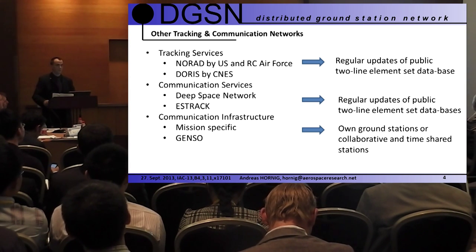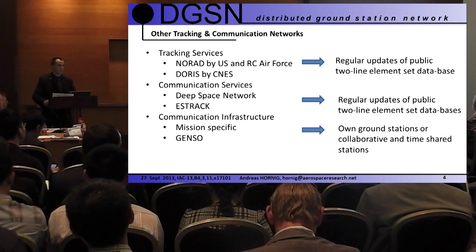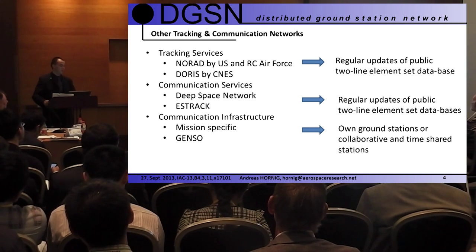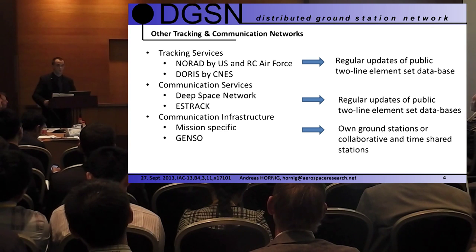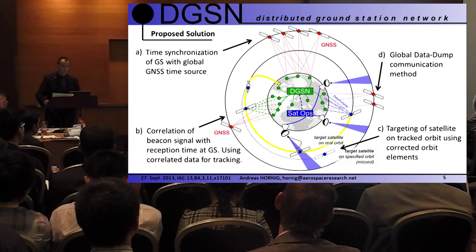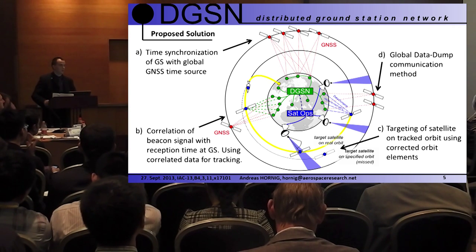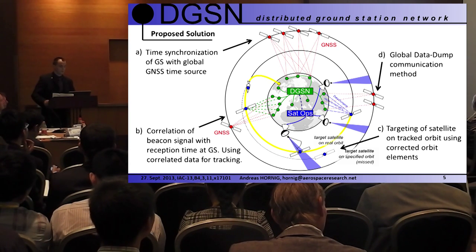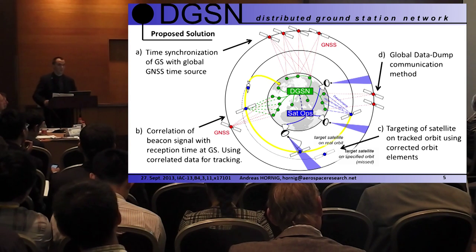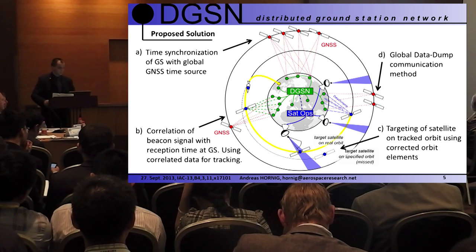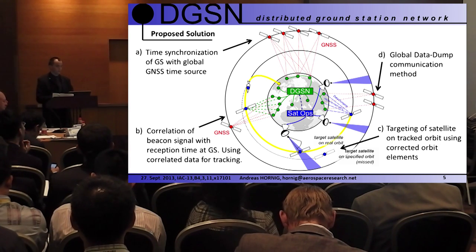Our project is setting up a grid of sensor nodes — just listening nodes. The first thing is correlation with global navigation satellite services so that we have a globally distributed time reference at each grid node. This is important for correlating the reception time of the signal and having the same time everywhere for our trilateration calculations. When the signal is sent out, the timing data has to be combined and the position check is only possible then.